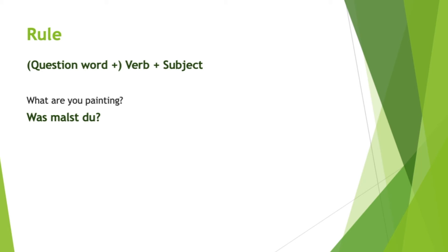Now a yes/no question example: 'Is Nico sleeping?' No question word here, so we put the verb first. 'To sleep' is 'schlafen' — it's an irregular verb. Conjugated for Nico, meaning 'he,' that's 'schläft.' Then we add the subject, which is Nico. So: 'Schläft Nico?'